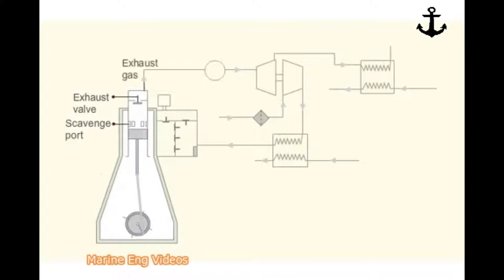The exhaust gas passes through the turbine side of the turbocharger via the cylinder exhaust valve and exhaust gas manifold. The exhaust gas drives the turbine. It also passes through the economizer where it is used to convert the feed water into steam.